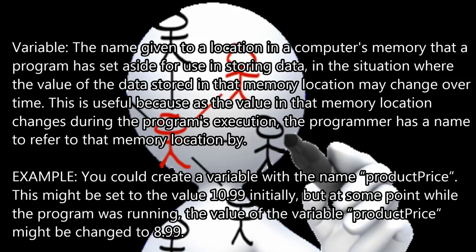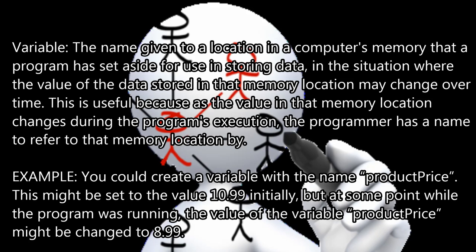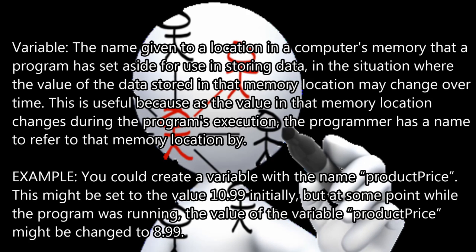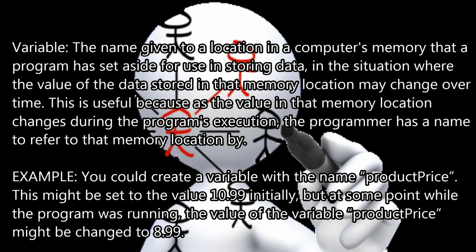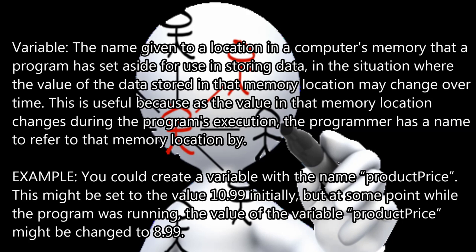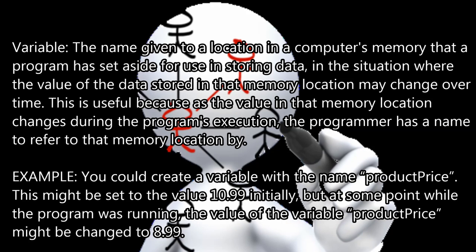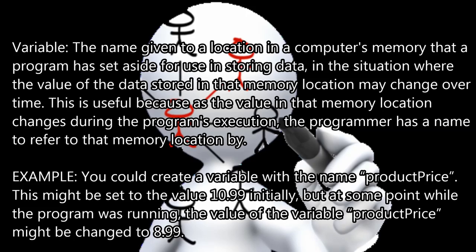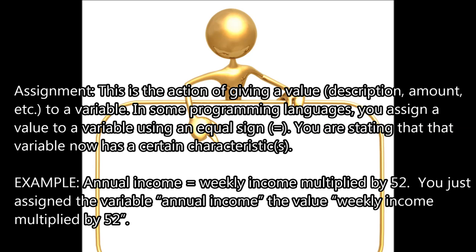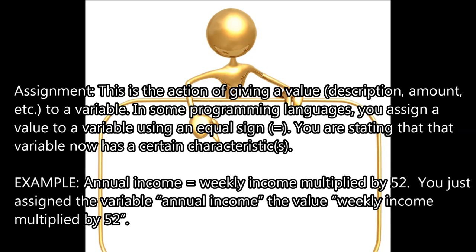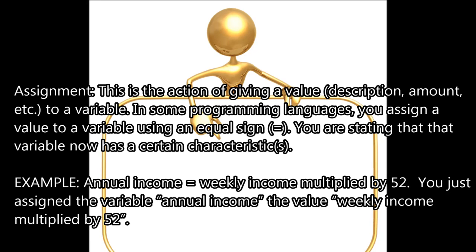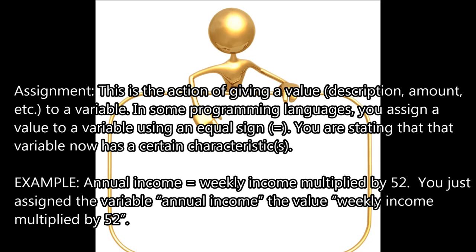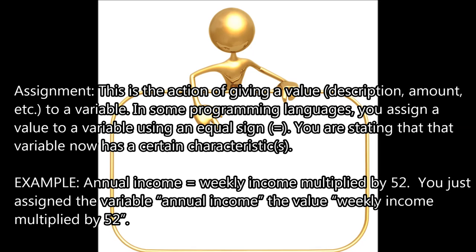Variable — the name given to a location in a computer's memory that a program has set aside for storing data, in a situation where the value stored in that memory location may change over time. For example, you could create a variable named ProductPrice, initially set to 1099, but at some point while the program is running, the value might be changed to 899. Assignment — this is the action of giving a value, description, or amount to a variable. In some programming languages, you assign a value to a variable using an equal sign. For example: annual income equals weekly income multiplied by 52.